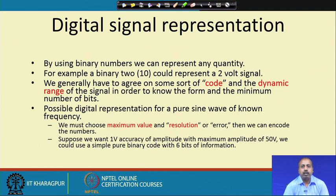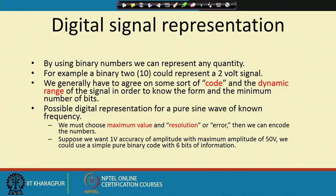For example, if it is some voltage value, we can say that 0 is 0 volt and 1 is 1 volt, or 0 is 0 volt and 1 is 5 volt, or 0 is minus 12 volt and 1 is plus 12 volt, or the other way — 0 is plus 12 volt and 1 is minus 12 volt. We can have different types of conventions. For example, binary 2 represented by 2 bits '10' could represent a 2 volt signal.